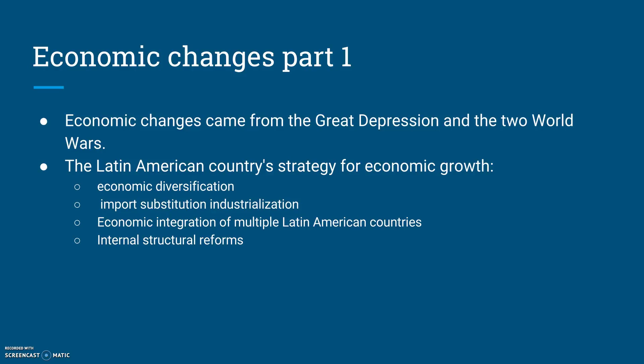Following the Great Depression and two world wars, this is where most of the economic change has truly come from. The Latin American countries' strategy for economic growth consisted of economic diversification, as they realized that if they just focused on one resource or one part of the economy such as agriculture or strict natural resources, if something goes wrong in that one department, they are essentially going to decline. They also utilized import substitution industrialization, also abbreviated as ISI, which is basically a trade and economic policy advocating replacing foreign imports with domestic production. This would lead to an increased GDP as they had more domestic reliance and didn't have to spend so much money on importing most of their goods.